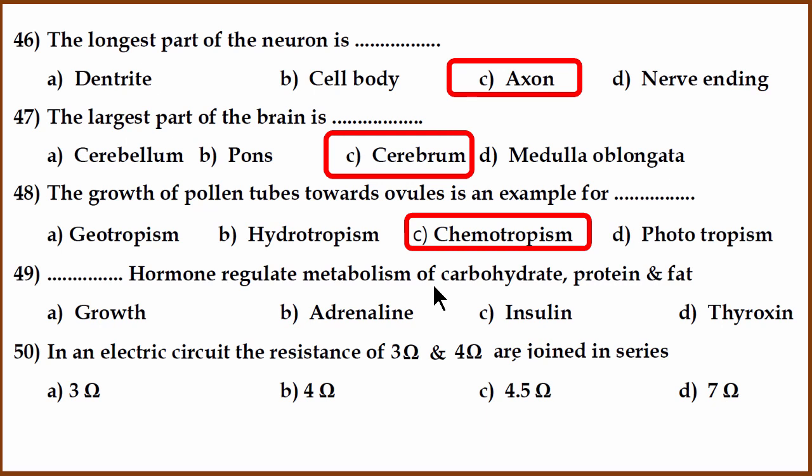Now the 49th question. Which hormone regulates metabolism of carbohydrate protein and fat? In the textbook they talk about thyroxin. In reality even insulin also regulates metabolism of the three things. But since the textbook says thyroxin, we will tick thyroxin.